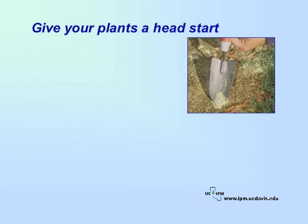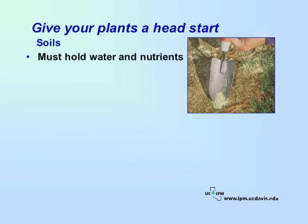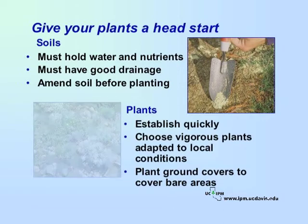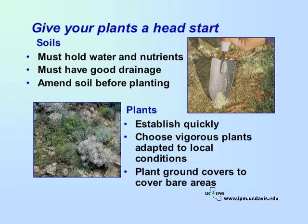Your soil type and plant selection are key components in preventing weeds. Soils must be able to hold enough water and nutrients so that your desired plant can establish a healthy root system, yet they must also have good drainage so that they do not become waterlogged. You can amend your soil before planting, but be sure to get soil from a reputable site. Confirm with your supplier that it does not contain herbicide residues, weed seeds, nutsedge tubers, or other propagules. Try to establish new plantings as quickly as possible so that weeds will not have a chance to take over. In landscapes, plant vigorous plants that are adapted to local conditions. Plant ground covers or other plants that will cover bare areas so that they can shade out weeds. For lawns, plant a grass species that grows well in your area.